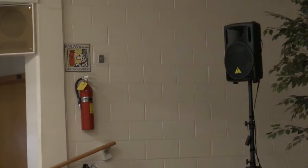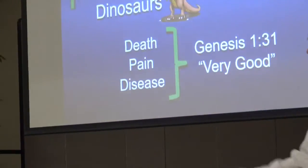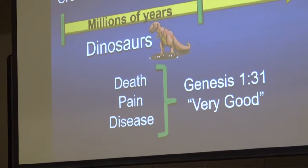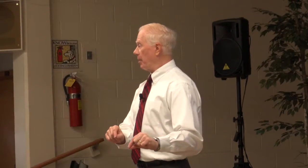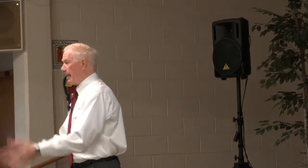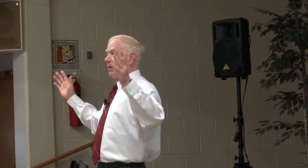In Genesis 1:31, God calls his creation 'very good.' Do we really believe that God called dead animals very good? Because that's what the fossil record is — the record of dead things. If this earth is millions of years old, then God would have pronounced dead things, decay, disease, and cancer very good. That's a whole different character for God. And if sin is not the cause of death, then who is? You see what happens when we start adding something to God's word.